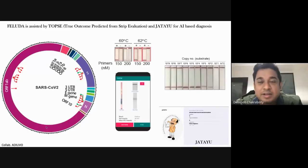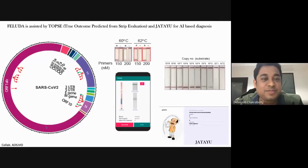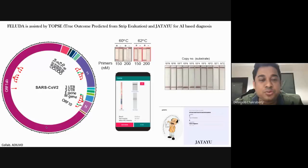Since I'm speaking for IISER Kolkata, I can't introduce Feluda without Topshé and Jatayu — they are quintessential figures that have to go together. We couldn't publish a manuscript with just Feluda; that would be sacrilege. So Feluda has Topshé, which stands for True Outcome Predicted from Strip Evaluation — a smartphone app developed with Advait Bala and Gitanjali's group, which basically takes a picture and has been machine learning trained to give a readout.